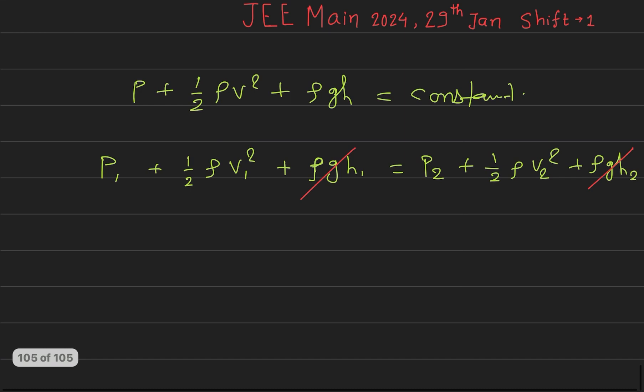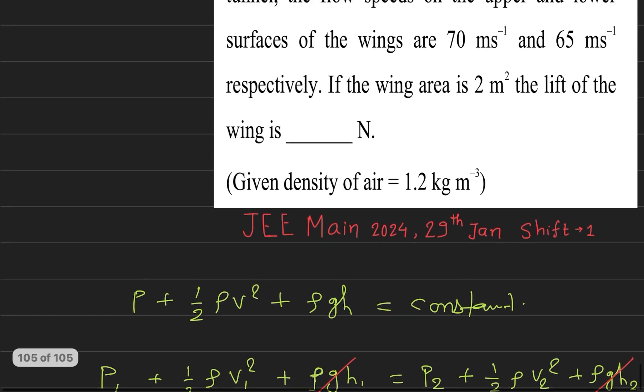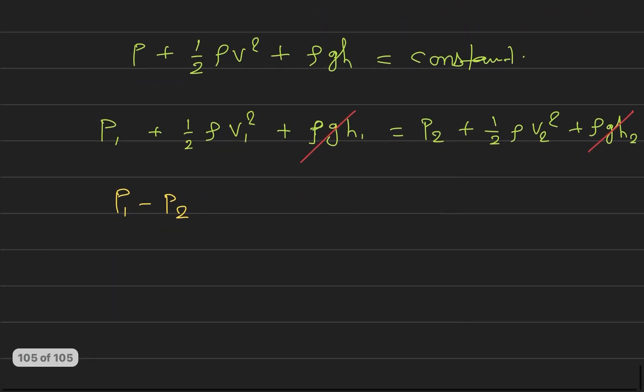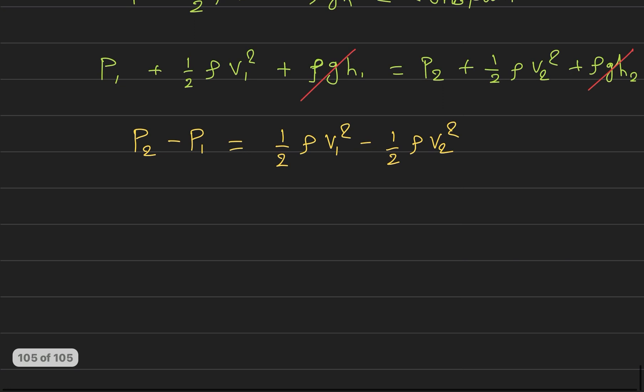After canceling, we get P2 minus P1 equals half rho v1 squared minus half rho v2 squared, because the pressure below will be higher and the pressure above will be lower.